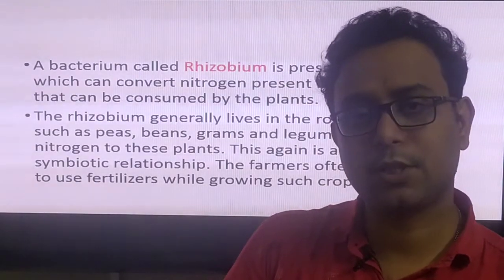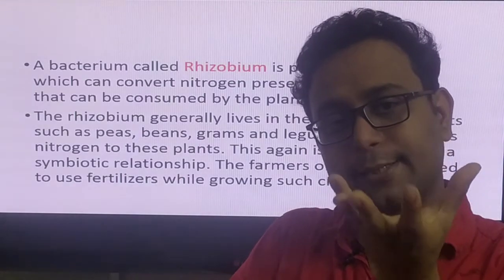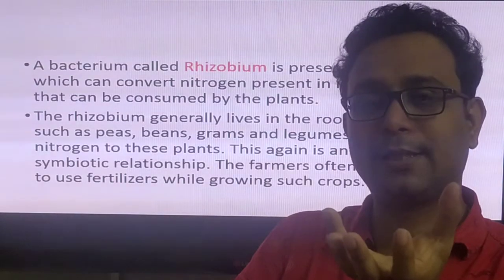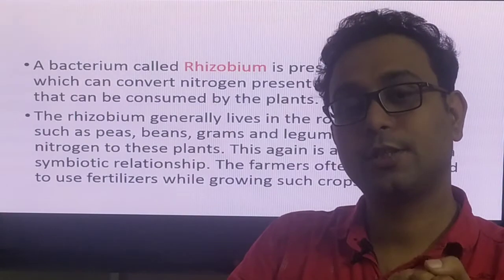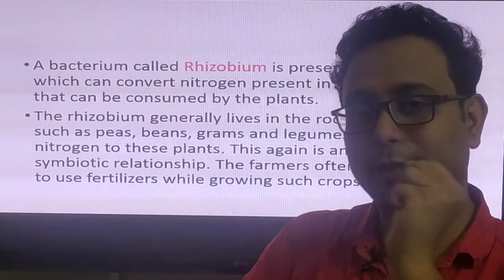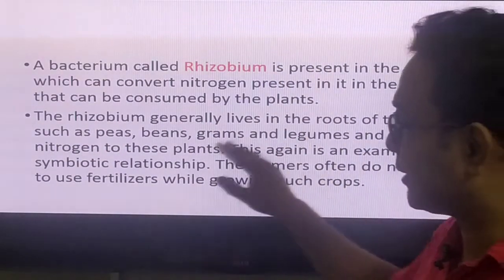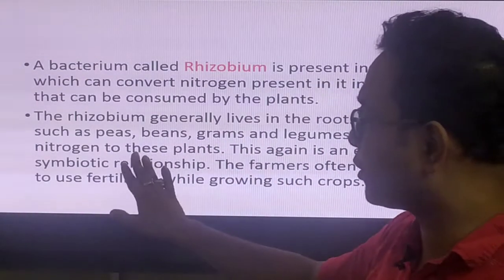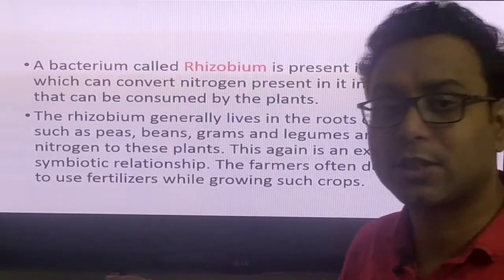Rhizobium is also called nitrogen fixation bacteria because in the atmosphere N₂ is present, but this is not an acceptable form for plants. Rhizobium bacteria can fix this nitrogen and convert it into nitrate, which is available for the plant. Rhizobium generally lives in the roots of plants such as peas, beans, grams, and other leguminous plants, and provides nitrogen to them.